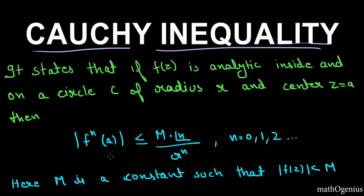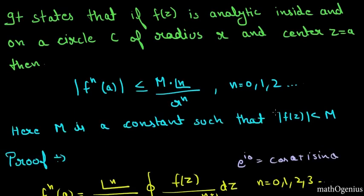then mod of f^n(a), this is the modified version of Cauchy integral formula, is less than equal to M multiplied by n factorial divided by r raised to power n where n equals 0, 1, 2, 3 and so on. And here M is such that mod of f(z) is less than M and M is a constant.